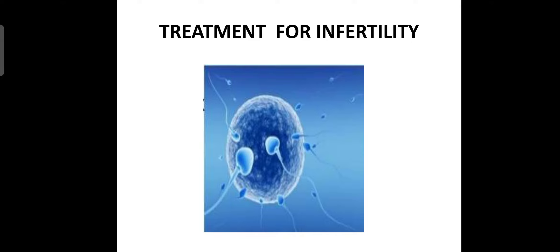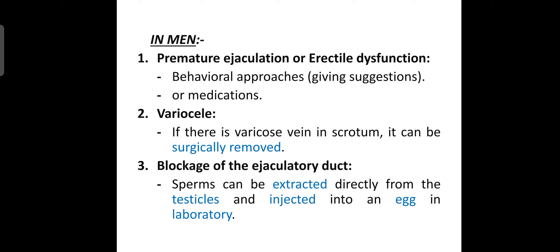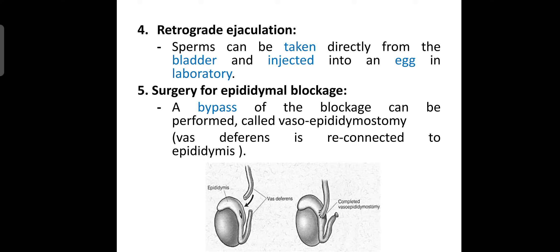For treatment of infertility in men, in cases of premature ejaculation or erectile dysfunction, a behavioral approach or medication is used. In case of varicocele, the varicose vein in the scrotum can be surgically removed. If there is a blockage of the ejaculatory duct, sperm can be extracted directly from the testicles and injected into an egg in a laboratory. In case of retrograde ejaculation, sperm can be taken from the bladder and injected into an egg in the laboratory. For epididymal blockage, a bypass called vasoepididymostomy can be performed, where the vas deferens is reconnected to the epididymis.